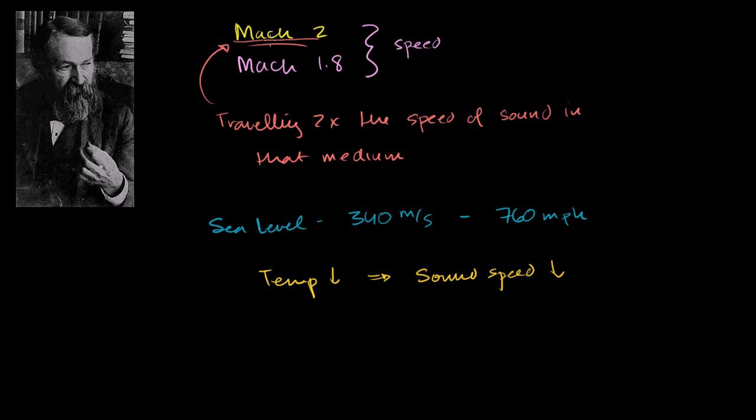So when someone tells you that something is traveling at Mach 2, they're saying it's traveling at 2 times the speed of sound for that medium—usually they're talking about something traveling through air, and for the speed of sound at the temperature that they're going through. If they're traveling at some super high altitude, and normally to travel at these types of speeds, you have to be at a fairly high altitude where the air is less dense.